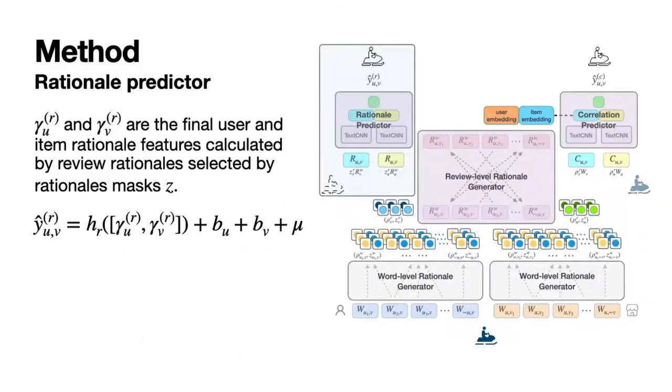Rationale Predictor predicts user ratings on items only by rational features. Here, gamma U upper R and gamma V upper R are the final user and item rational features calculated by review rationales selected by rationales masks. And we use the neural form of the tensor factorization model to predict the user ratings on items.